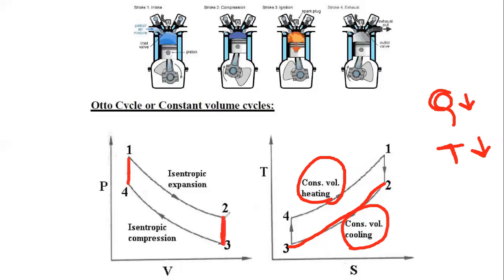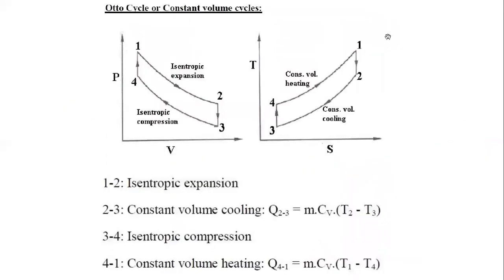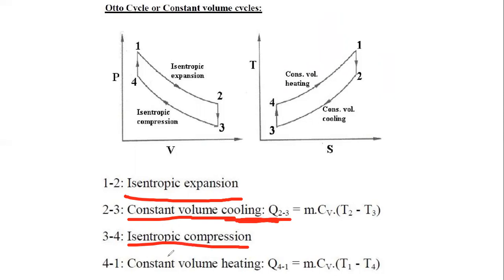In summary, the Otto cycle has four stages: isentropic compression (3→4), constant volume heating (4→1), isentropic expansion (1→2), and constant volume cooling (2→3). The PV and TS diagrams together describe the complete Otto cycle. Any questions about these two diagrams or any stage?